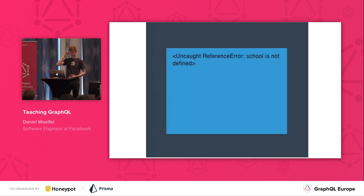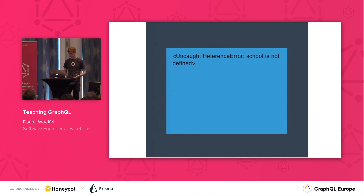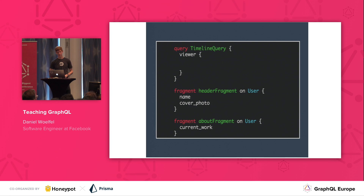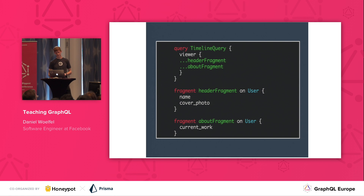Now the student sees a familiar problem: no separation of concerns. We have one big query that describes all the data and doesn't match how we think about views at all. Let's try again and see what GraphQL provides to solve this problem. That's when we introduce fragments — GraphQL lets you group your fields into composable packages, just like components in React. And once people see these extra slides and the motivation for the feature, they really understand it.